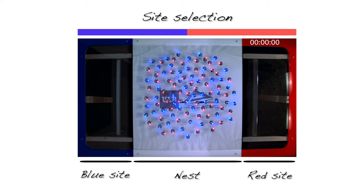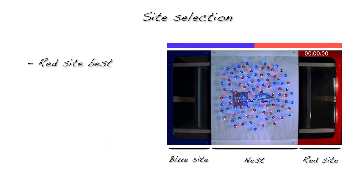robots can move either to the red or to the blue site. The goal of the swarm is to find consensus on the best site, in our case, the red site. The quality of a site is an abstract numeric value.